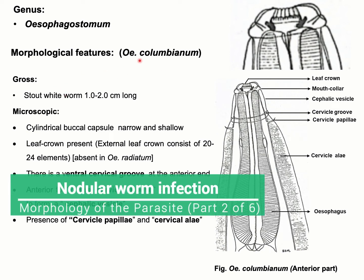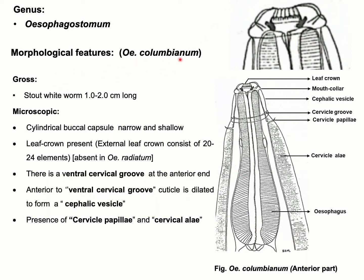Morphological features of Oesophagostomum columbianum. Grossly, the parasite is whitish in color and half to two centimeters in length. There are different microscopic features which are important for the identification of this Oesophagostomum columbianum species.